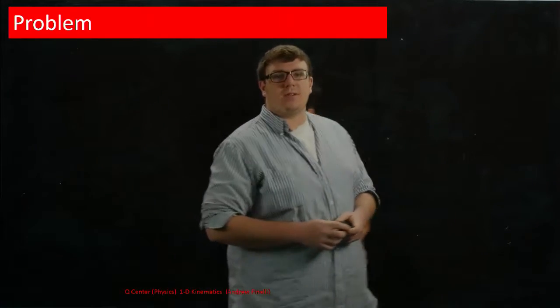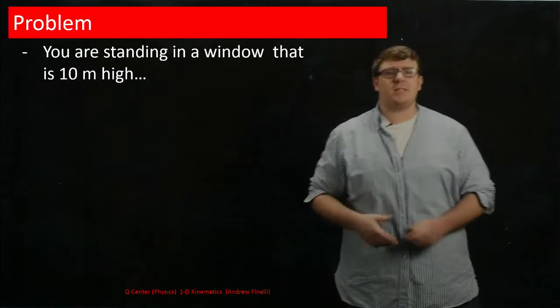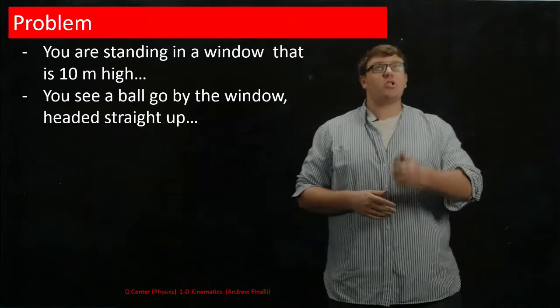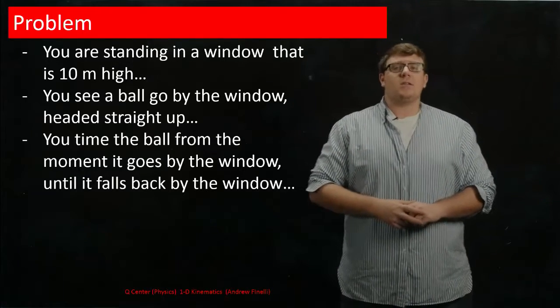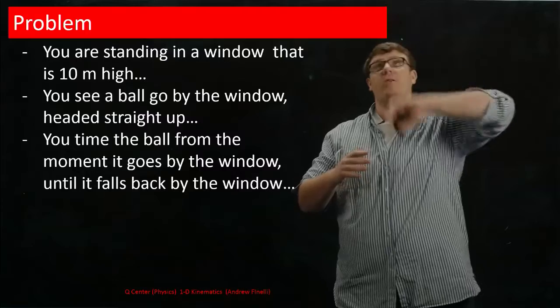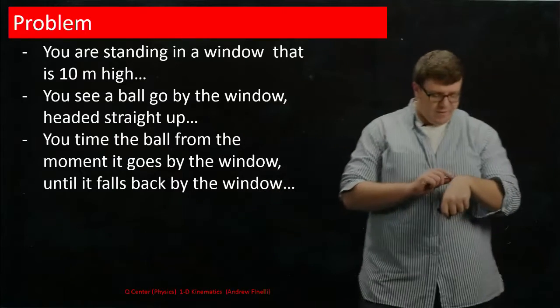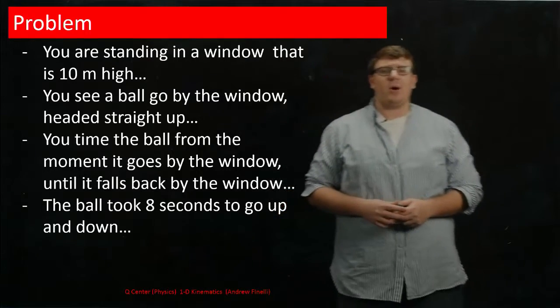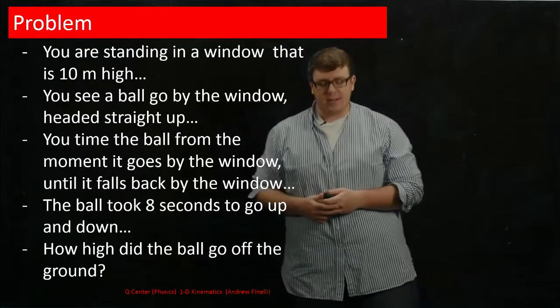Cool. Thank you very much, John. So the first thing I'm going to do is I'm going to set up the problem. So the problem here is that you're standing in a window that's 10 meters off the ground. Then you see a ball come up past the windowsill, and it's going straight upward. So no moving in any other direction other than straight up and down. So you decide that you're going to time the ball from the moment it goes past the windowsill until it goes up out of view and comes back down and falls out of view below the windowsill. And you're going to keep your very, very accurate time on your stopwatch. And when you do this, you find that the ball took 8 seconds to go up and down past the windowsill. And what we want to know is how high off the ground the ball went.